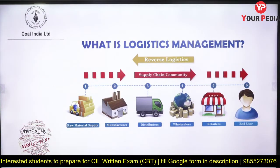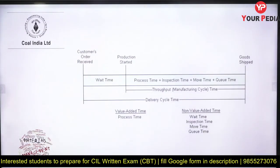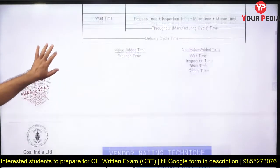Reverse logistics is another important topic. We discuss forward logistics in supply chain management, but due to increased competition and customer service needs, reverse logistics is also relevant — questions have been asked from it. Topics like throughput time, total cycle time, and delivery cycle time are also important. The full cycle from production start to goods dispatch — what it is called and which times are involved — has been asked.